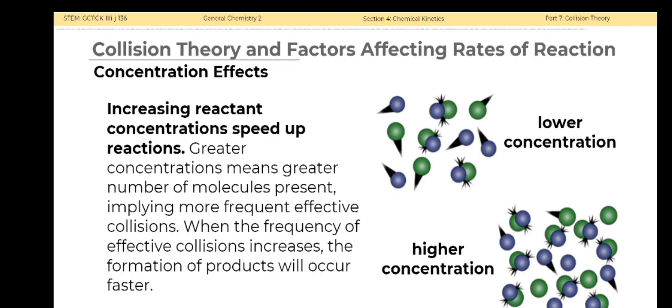Let us now use collision theory to understand the effect of different factors on the rate of reaction. Increasing reactant concentrations speed up reactions. Greater concentrations means greater number of molecules present, implying more frequent effective collisions. When the frequency of effective collisions increases, the formation of products will occur faster.